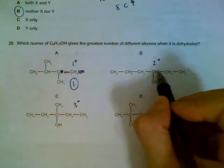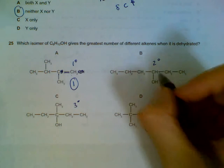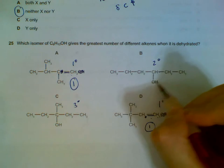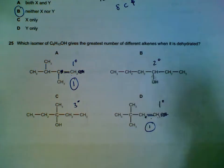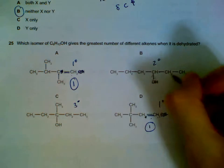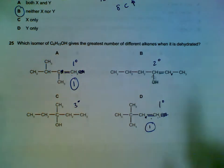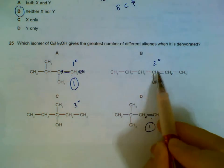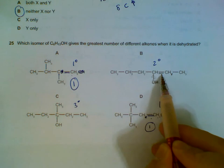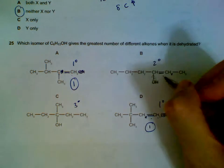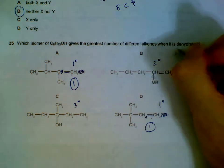Now for the secondary alcohol, we can remove from several positions. Removing the hydroxyl and this hydrogen gives a double bond here, and there is a possibility of cis-trans isomerism. So we have a cis version and a trans version — two possible isomers so far.